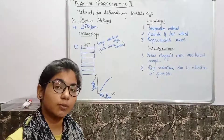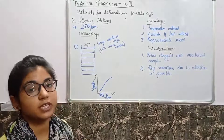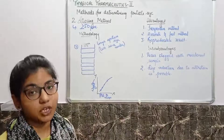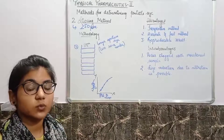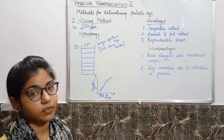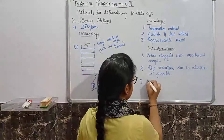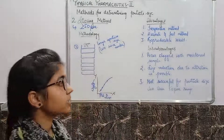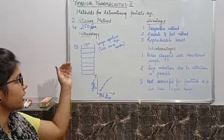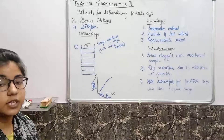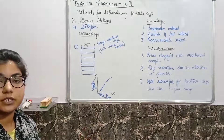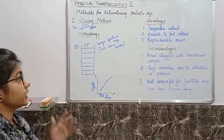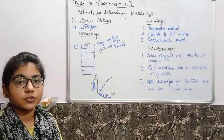The third disadvantage is that the minimum particle size range for this method is 50 micrometers. If you use this method for smaller particle sizes, it becomes unsuccessful — it is a failure for particles smaller than 50 micrometers. These are the advantages, disadvantages, and methodology of the sieving method. In the next lecture we will discuss the other two remaining methods of particle size determination. Thank you.